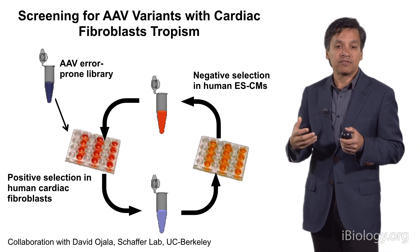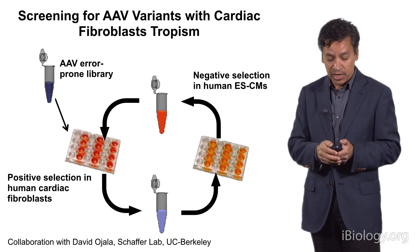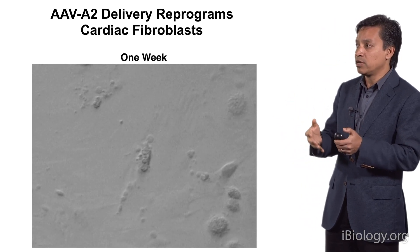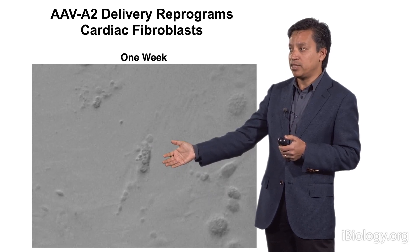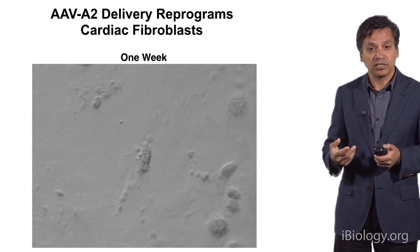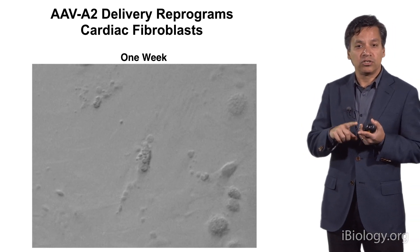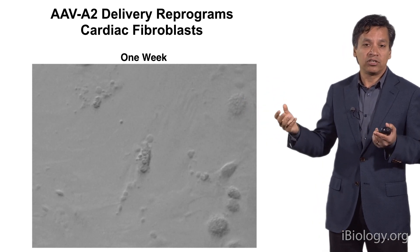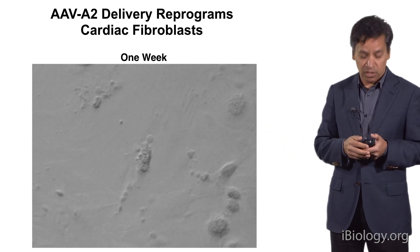The question then was: can this vector express high enough levels of reprogramming factors to actually convert the cell? We cloned the genetic material into this vector, put it into a human cardiac fibroblast, and what you see is a cell that used to be a fibroblast vigorously beating just one week after introducing these genes. So we feel we've now got a good cocktail to induce cell fate conversion, a good vector to deliver it, and we're ready to do final trials in large animals before moving this technology towards a human clinical trial.